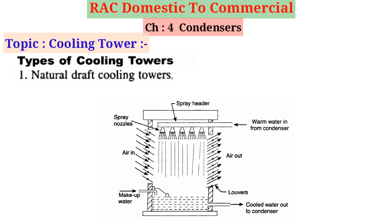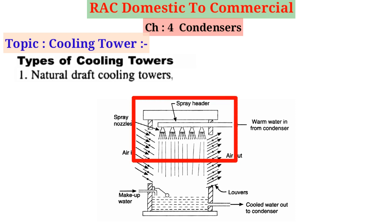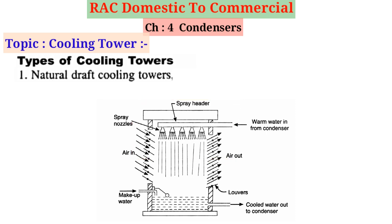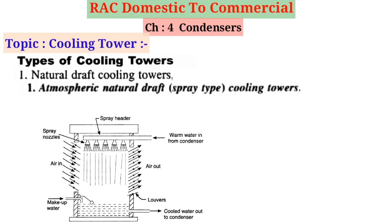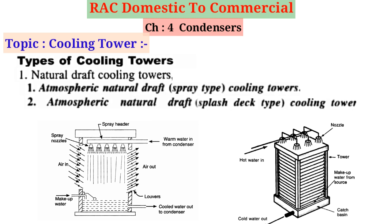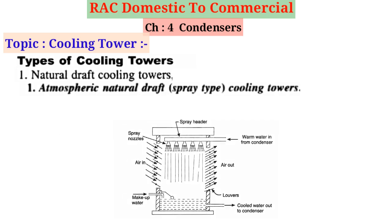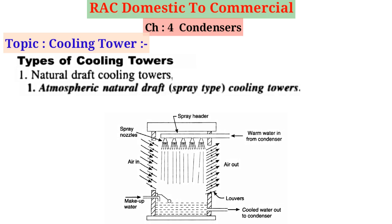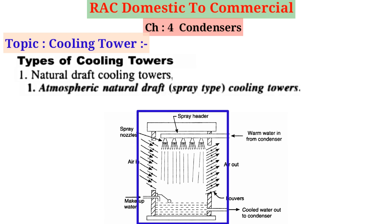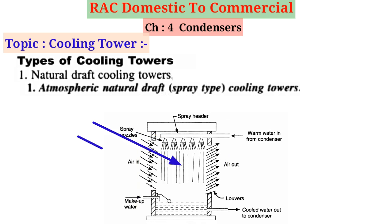Natural draft cooling towers are equipment where atmospheric air circulates and cools down the hot water of the condenser. These are divided further into two parts: Part 1 is the atmospheric natural draft spray type, and Part 2 is the atmospheric natural draft splash deck type. The atmospheric natural draft spray type cooling tower is a box-shaped structure with louvers. The louvers allow atmospheric air to pass through the tower but slant down towards the inside of the tower to retain water in it.